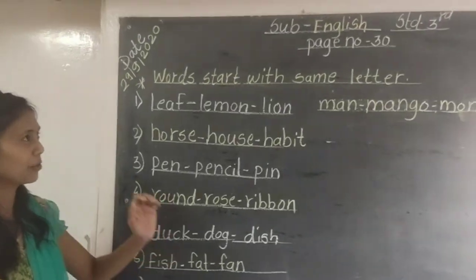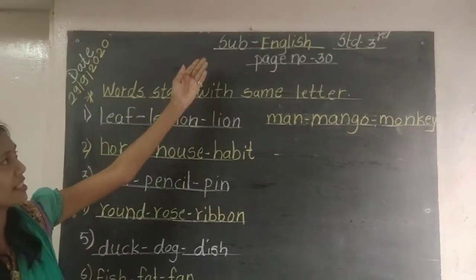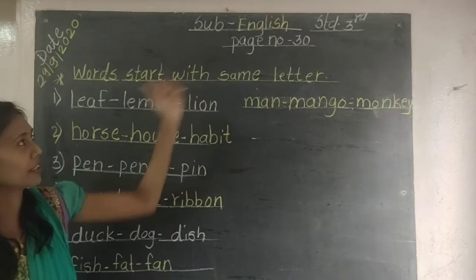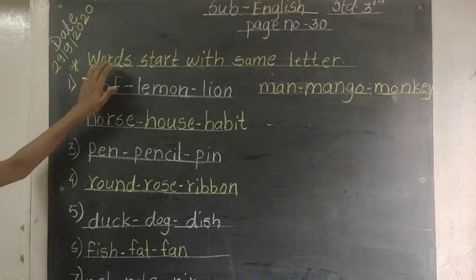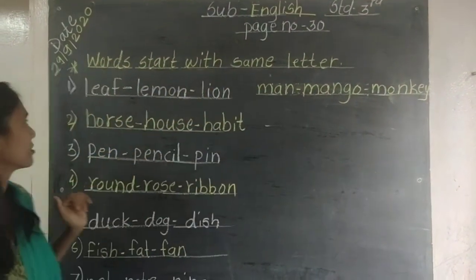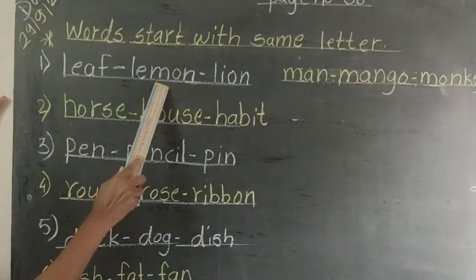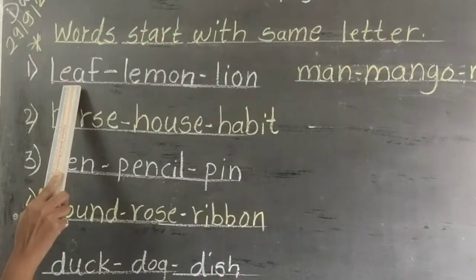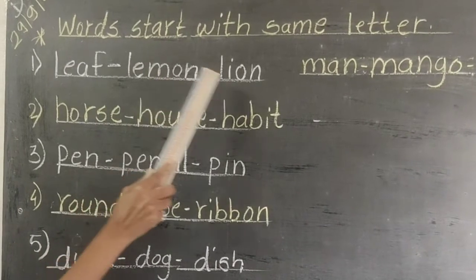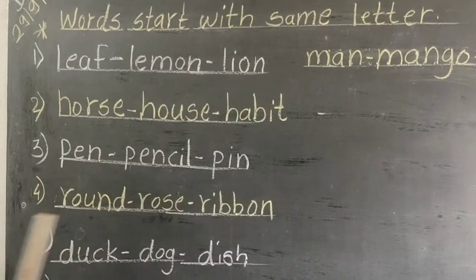Good morning children, today we are going to learn standard third subject English, page number 13. Some words start with same letters. First, leaf, lemon, lion. Leaf means plant, lemon means limbu, lion means seaham.